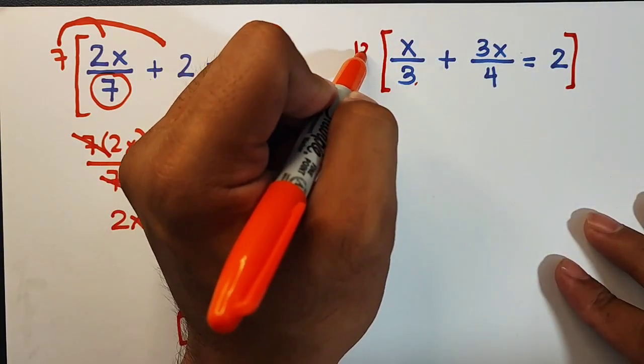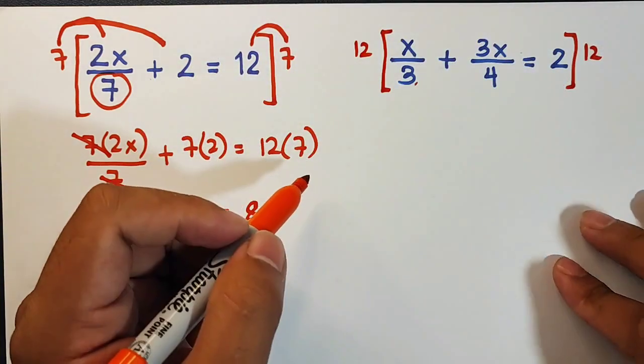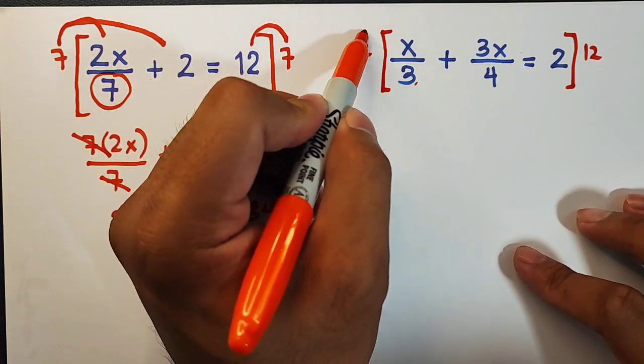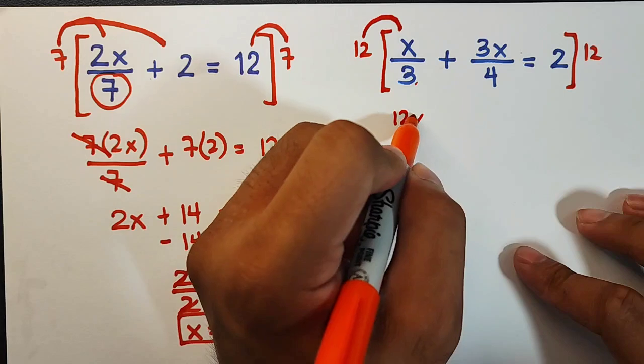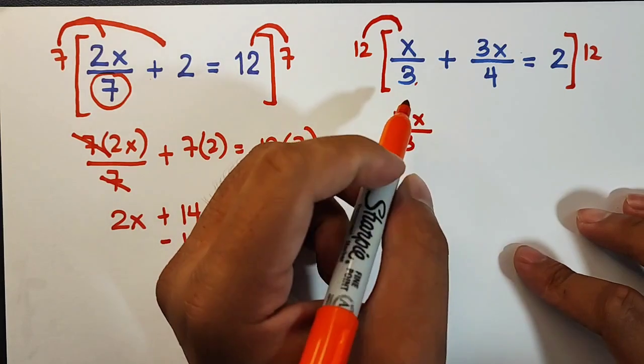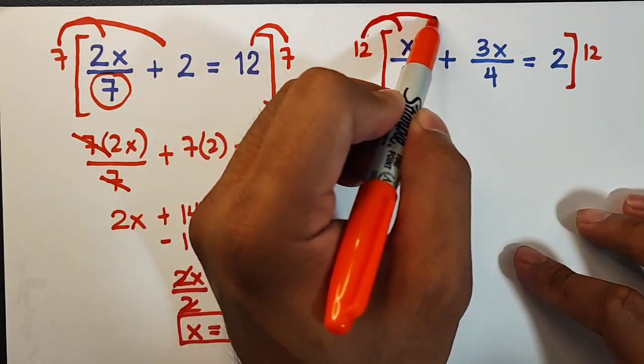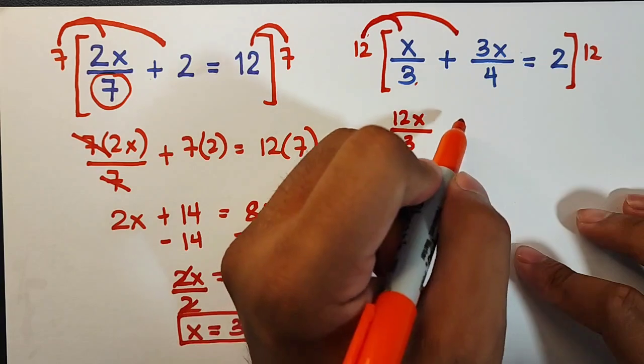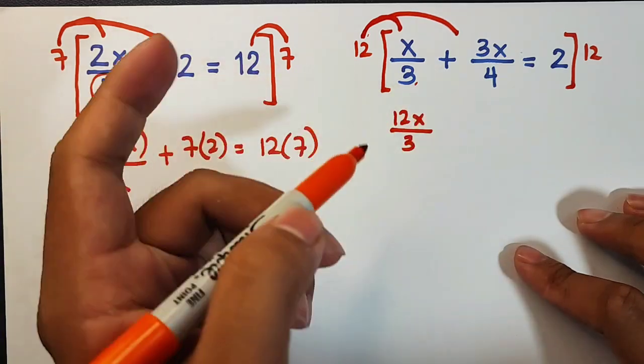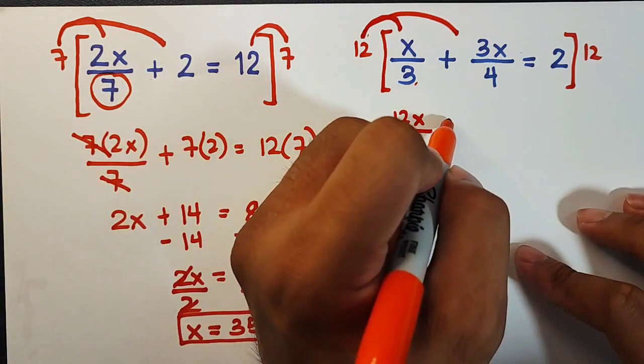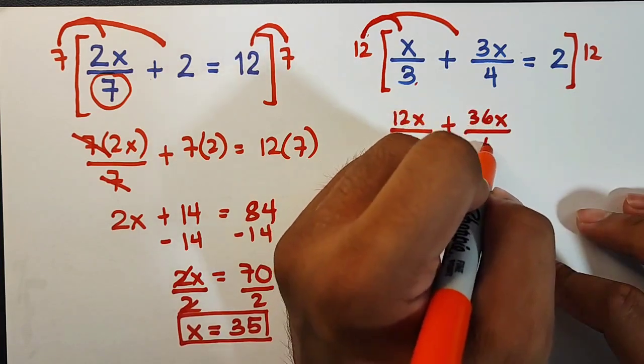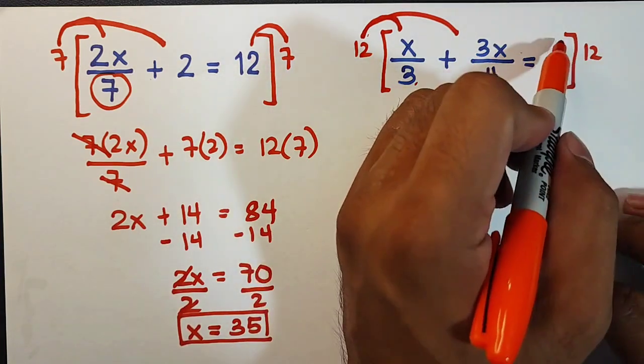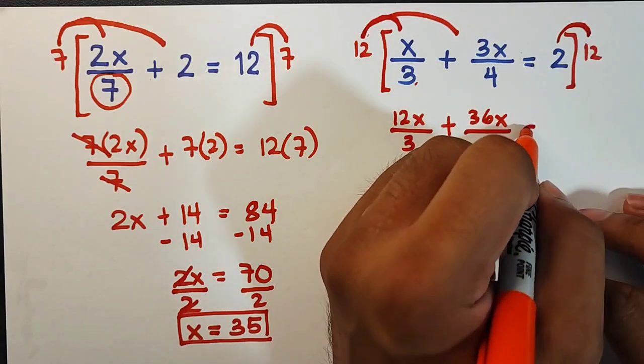By distributive property we will multiply it one by one: 12 times x, so that is 12x over 3. This one: 12 times 3x over 4—plus 12 times 3x is 36x over 4. And then for this part, 2 times 12, the answer is 24.